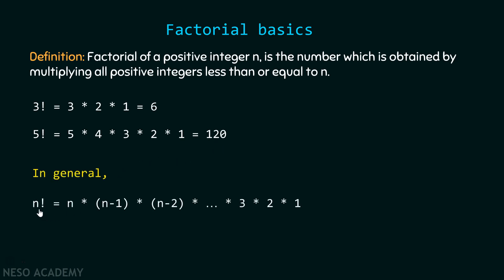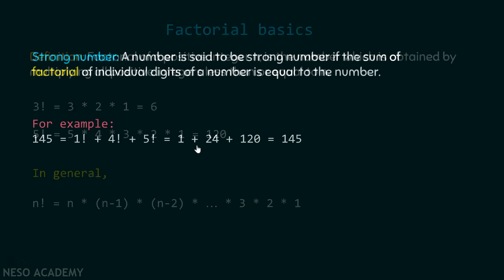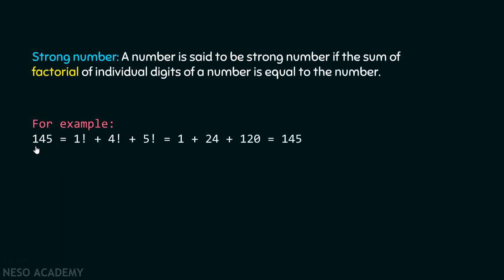In general, n factorial equals n × (n−1) × (n−2) × ... × 3 × 2 × 1. Coming back to our example with 145: 1 factorial is 1, 4 factorial is 4 × 3 × 2 × 1 = 24, and 5 factorial is 5 × 4 × 3 × 2 × 1 = 120. Adding them together gives 145.